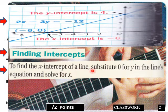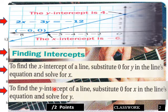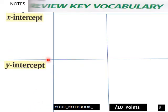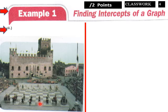Finding intercepts. To find the x-intercept of a line, substitute zero for y in the line's equation and solve for x. To find the y-intercept of a line, substitute zero for x in the line's equation and solve for y. Students, in your own words, define x-intercept and define y-intercept.